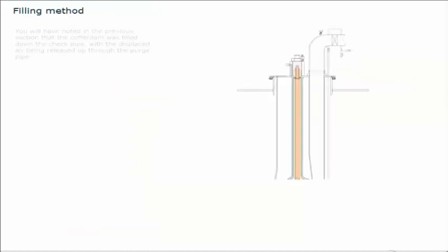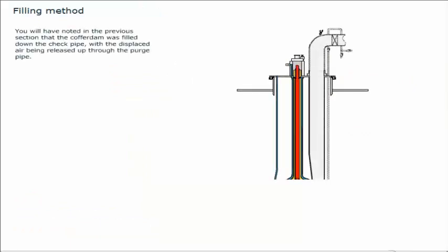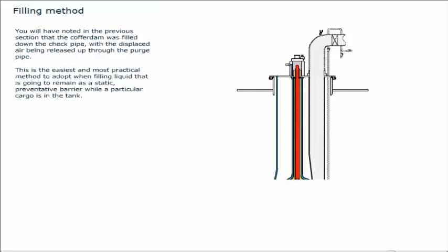You will have noted in the previous section that the cofferdam was filled down the check pipe, with the displaced air being released up through the purge pipe. This is the easiest and most practical method to adopt when filling liquid that is going to remain as a static, preventative barrier while a particular cargo is in the tank. In practice, however, the cofferdam can be filled from either direction.